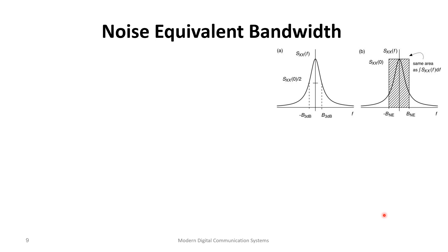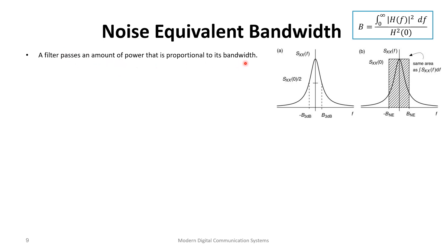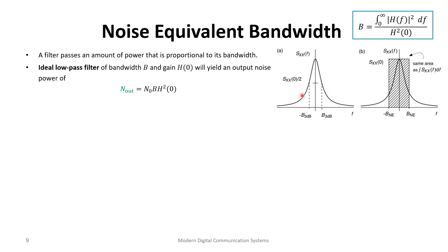Now let's define the noise equivalent bandwidth. A real system is not ideal, but sometimes we want to compare it with an ideal system. A filter passes an amount of power proportional to a given bandwidth. Because a real filter is not flat, different frequencies contribute different amounts of power. For an ideal low-pass filter with gain H₀, the output would be N₀/2 times 2B times H₀², giving output power N₀·B·H₀².